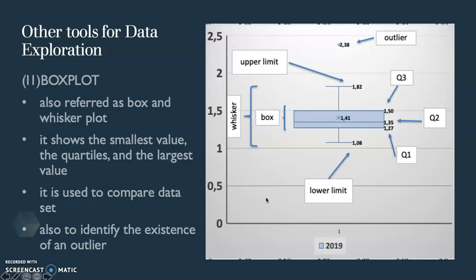The next tool is box plot. It is also called box and whisker plot. Why is it called box and whisker plot? Because you see here the blue box is the box and this line is called the whisker.